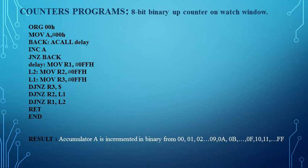Before starting with the codes, we should know what a counter is. A counter is a sequential circuit which counts the number of clock pulses. Depending on the pattern, if we are counting in the upward direction, we call it an up counter, and if we are counting in the downward direction, we call it a down counter. Here we are writing a program for an 8-bit binary up counter.